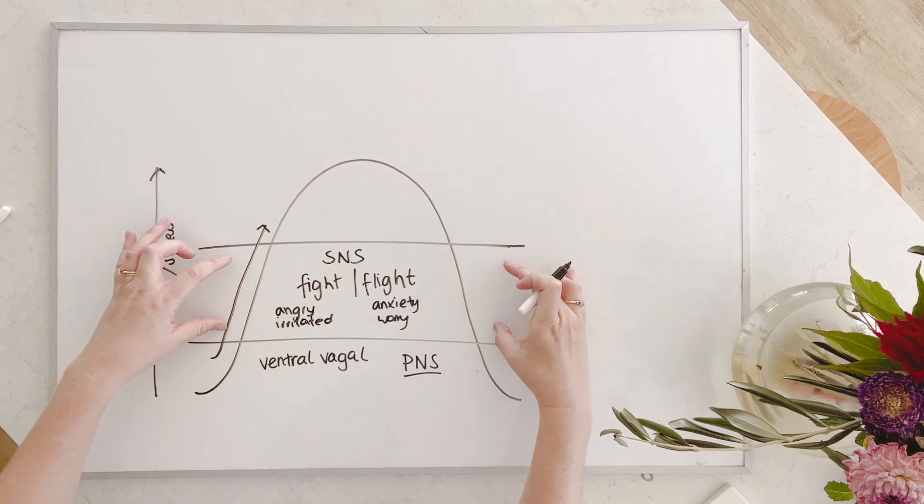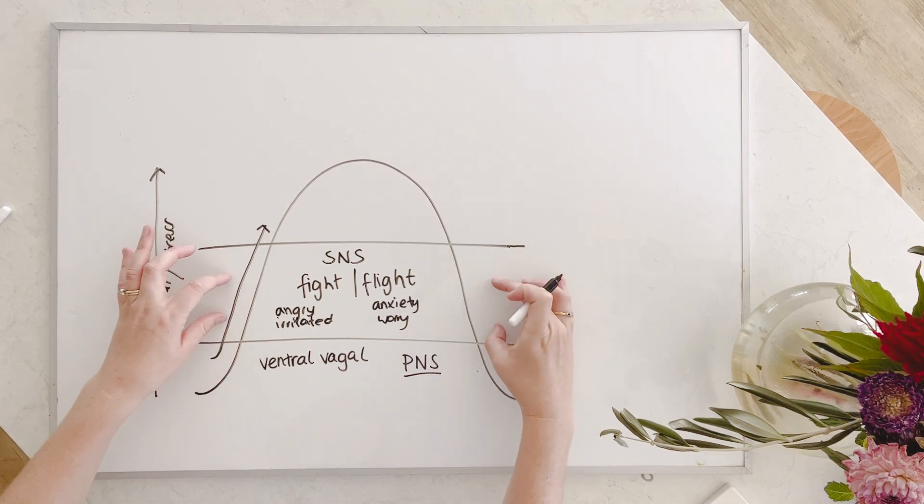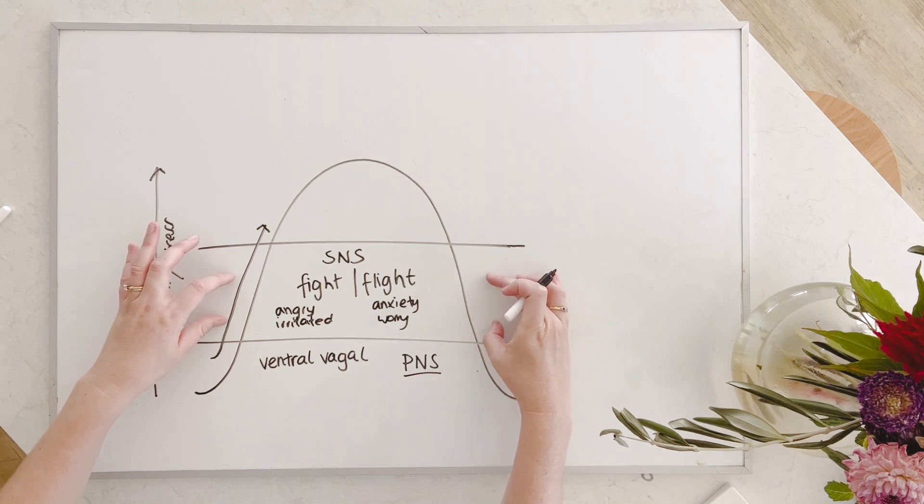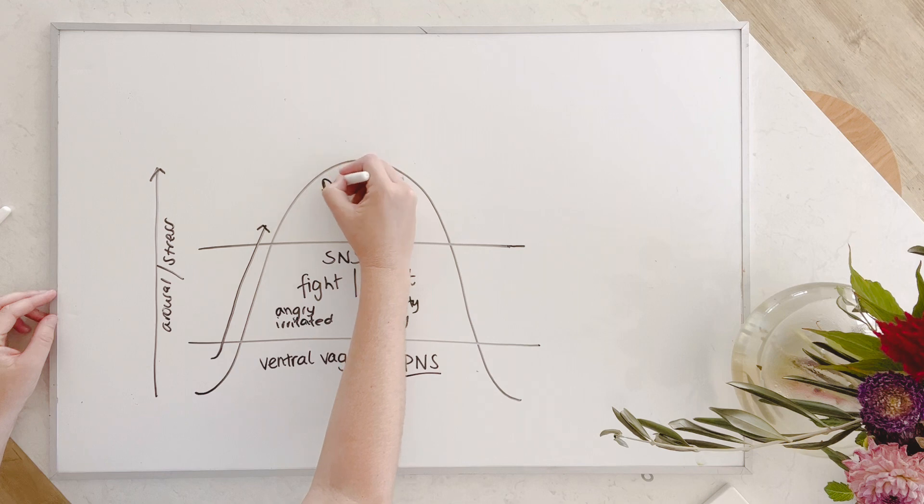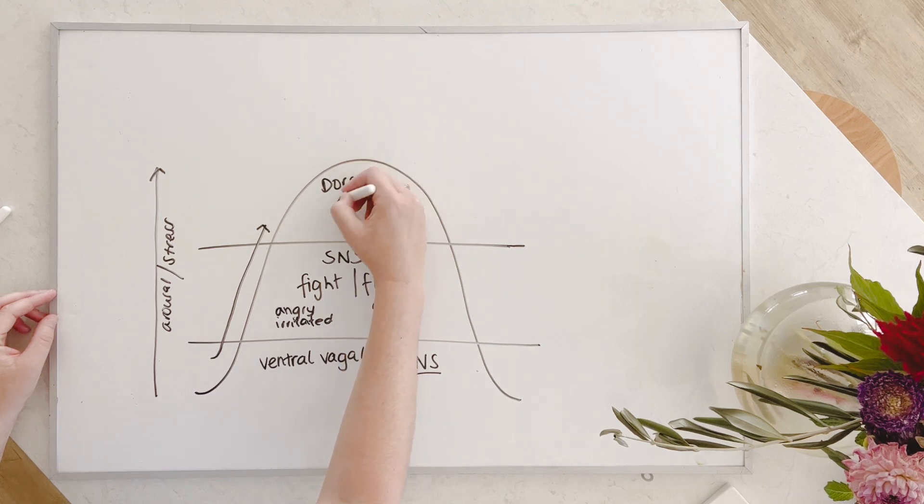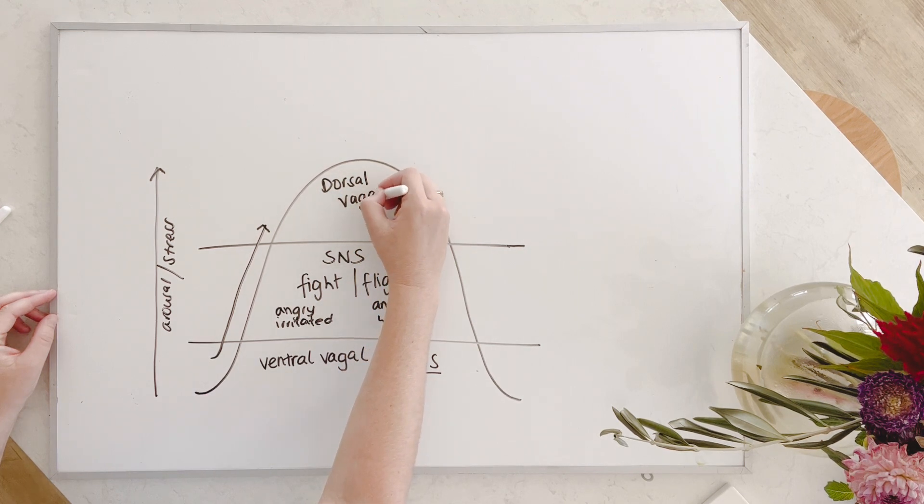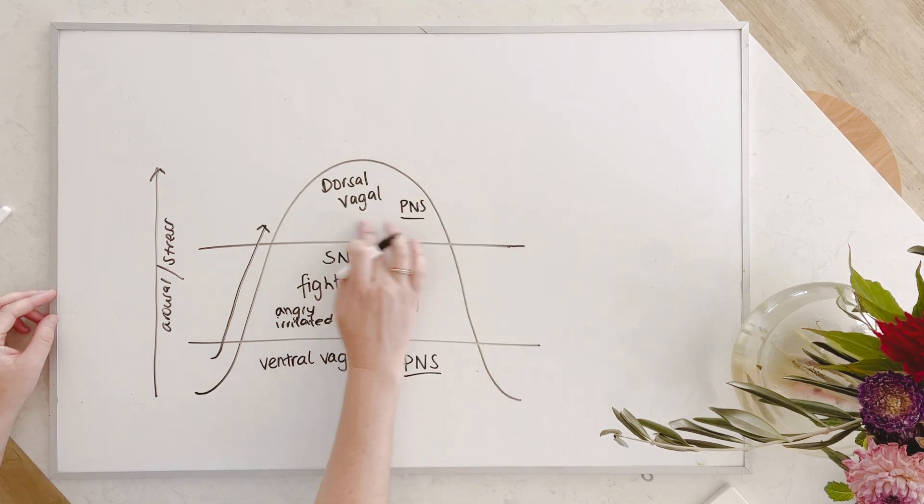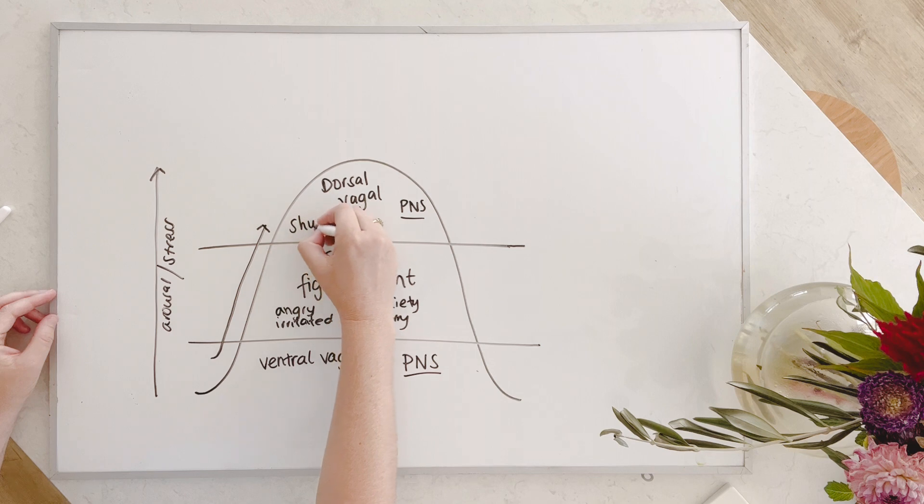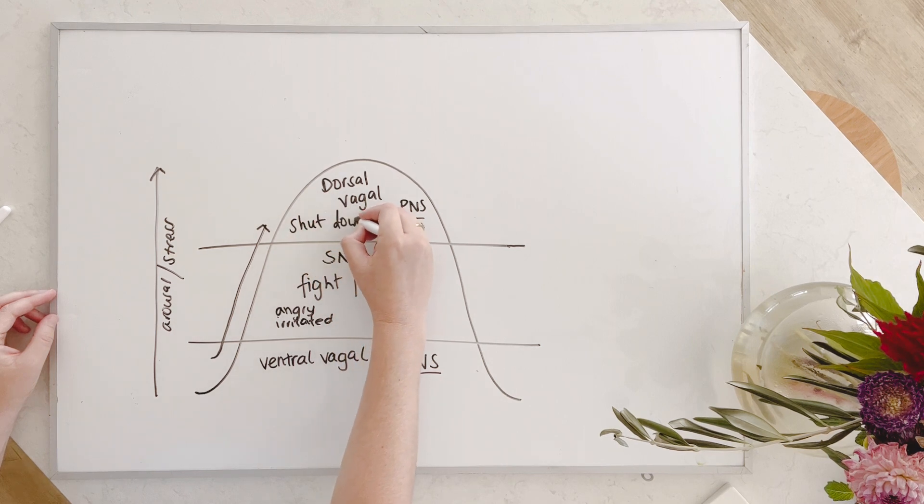we might have a nervous system that lives above the baseline a lot of the time, and it also gears itself to going into this next place, which you probably heard me call dorsal vagal, which is actually a branch of the parasympathetic nervous system. And this is a place of shutdown or collapse.